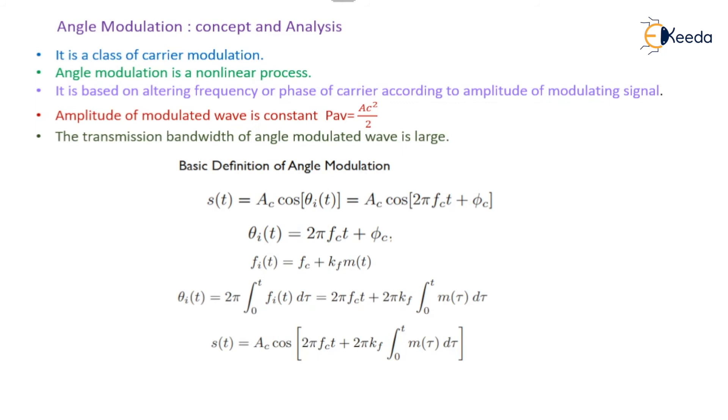So finally the output will be s(t) = Ac cos[2π fc t + 2π kf ∫₀ᵗ m(τ) dτ]. If it is a PM wave, then θi(t) will be 2π fc t + kp m(t).